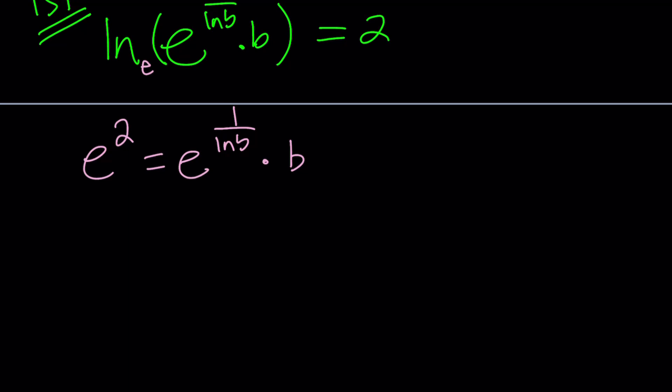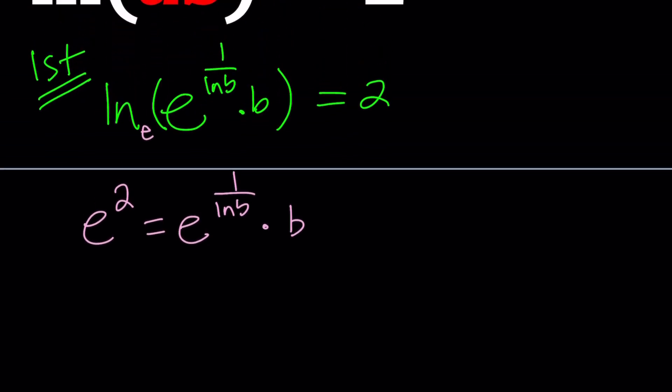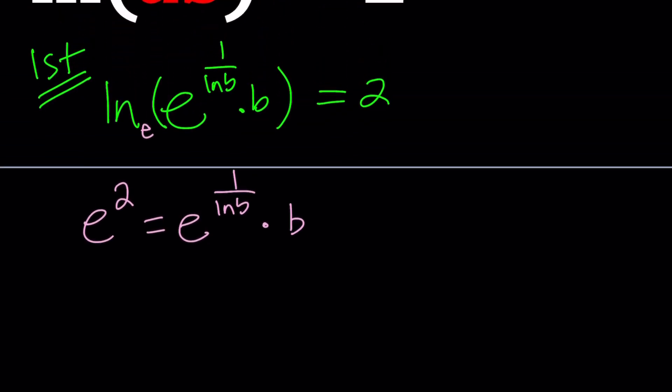One thing that's a little challenging about this problem is to be able to simplify it because we have a very non-standard situation. For example, what is e to the power 1 over ln b? You probably know what e to the power ln x is, right? That's equal to x, but we don't have that. We have the reciprocal of the natural log of b. So how do we handle this? We could use exponentials. For example, b can be written as e to the power ln b just by using this identity. So if you can't tweak this one, we could probably tweak the other one.